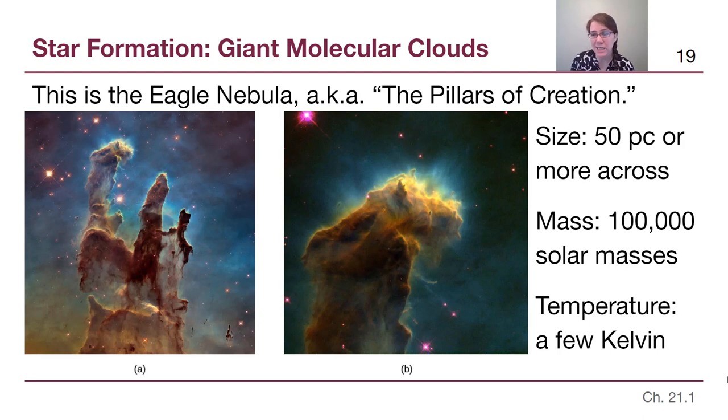So this spans a distance that is much larger than just a couple of stars' distance across. The mass contained is 100,000 solar masses, so if we were to break this cloud of gas and dust down into sun-like stars, we could make 100,000 of them. And the temperature is very cold, a few Kelvin, where, as a reminder from Chapter 5, zero Kelvin is absolute zero. It's the minimum possible temperature in the universe.